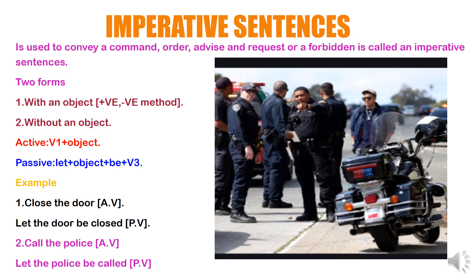Example (positive, with object): Active voice — 'Close the door.' Passive voice — 'Let the door be closed.' Start with 'let', bring the object 'the door', then write 'be', then 'closed' which is V3, the third form of the verb. Another example: 'Call the police' becomes 'Let the police be called.' 'Called' is the V3, third form of the verb.